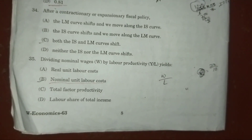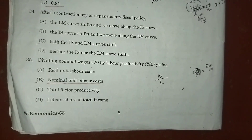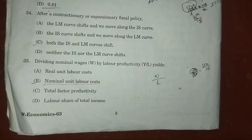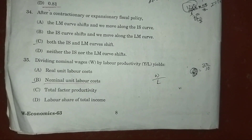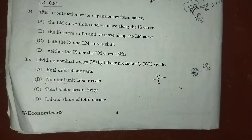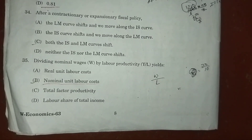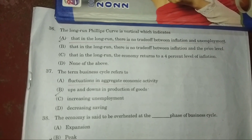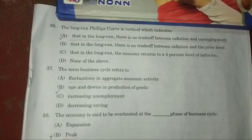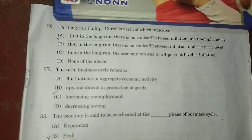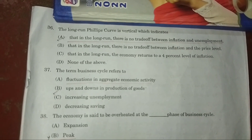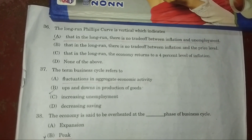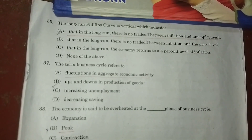Question 35: Dividing nominal wage by labor productivity — answer: B — nominal unit labor cost. Question 36: The long-run Phillips curve is vertical, indicating — answer: A — that in the long run there is no trade-off between inflation and unemployment.